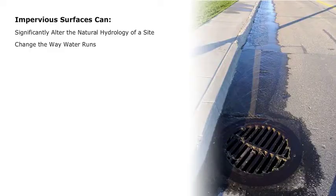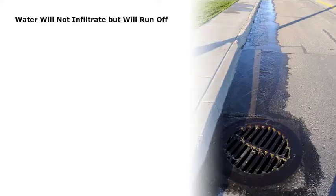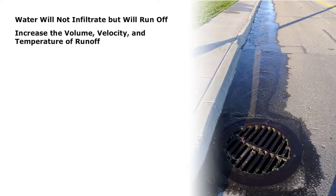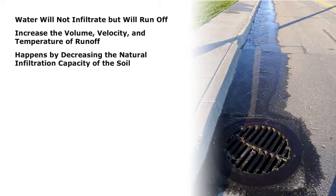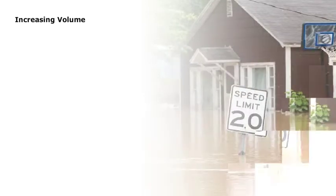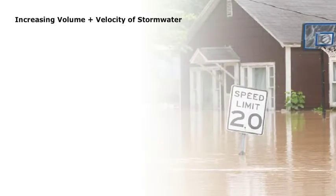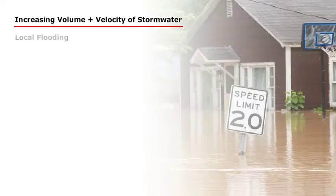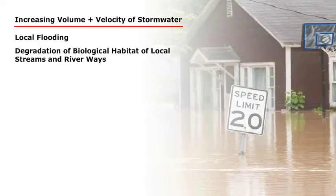Impervious surfaces change the way water runs on a site — no longer will it infiltrate, but it will run off, increasing the volume, velocity, and even the temperature of the runoff itself. All of this happens by decreasing the natural infiltration capacity of the soil. Increasing volume and velocity of stormwater — meaning how much and how fast it runs off — can cause serious things like local flooding and degradation of the biological habitat of local streams and riverways.